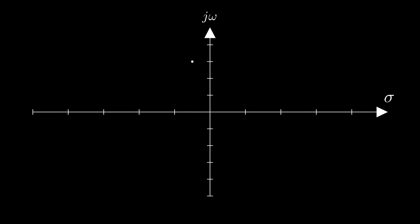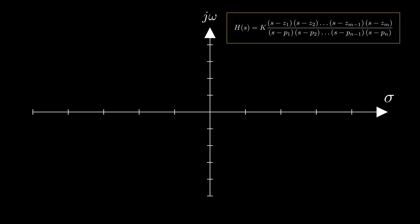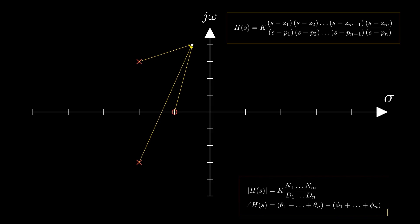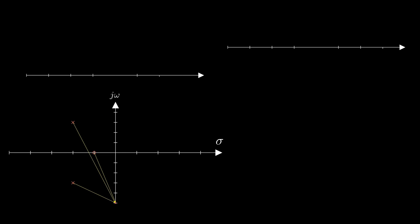Each point in the complex S plane behaves like a two-dimensional vector, and the difference between any two points is also a two-dimensional vector. For a transfer function where z sub i and p sub i represent the locations of each zero and pole in the S plane respectively, each term in the numerator represents a vector from that zero to a given point, with magnitude N sub i and phase theta sub i; similarly, each term in the denominator represents a vector from the pole to the point, with magnitude D sub i and phase phi sub i. The magnitude and phase response at any point in the S plane is given by the corresponding formula. By sweeping S across the entire S plane we get the full Laplace spectrum; by sweeping S along the j omega axis we get the Fourier spectrum.